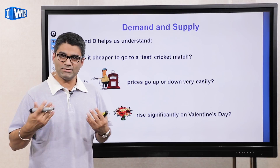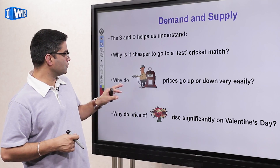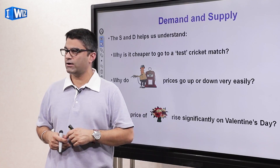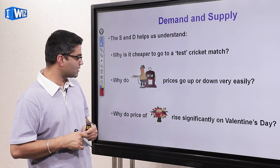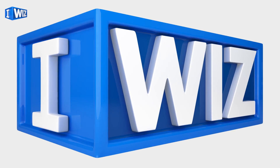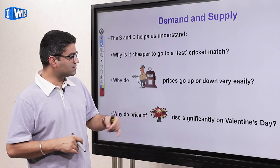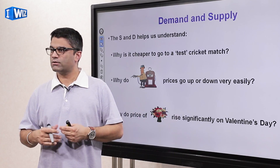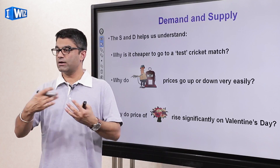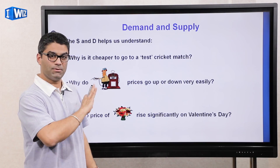Now you're going to understand how some of these things we've done in the real world work. For example, why do gas prices change very often and are very volatile? And then similarly, why do prices of roses rise significantly the couple of days before Valentine's Day, but then go down after that? It's not because of any other reason but simple demand and supply.